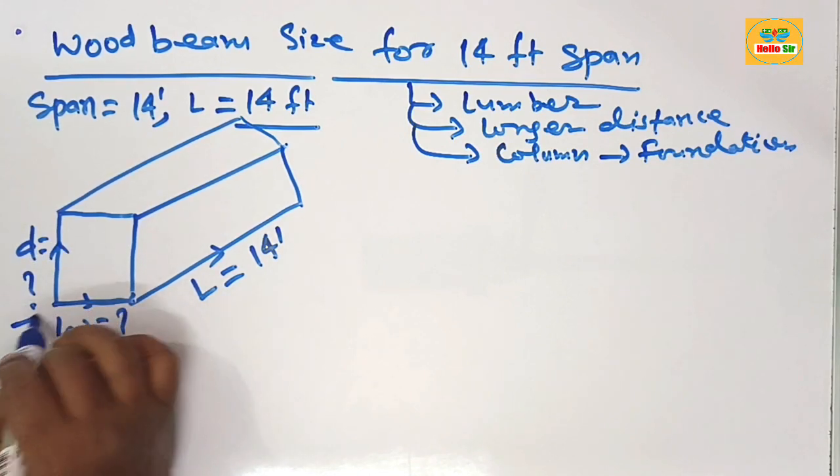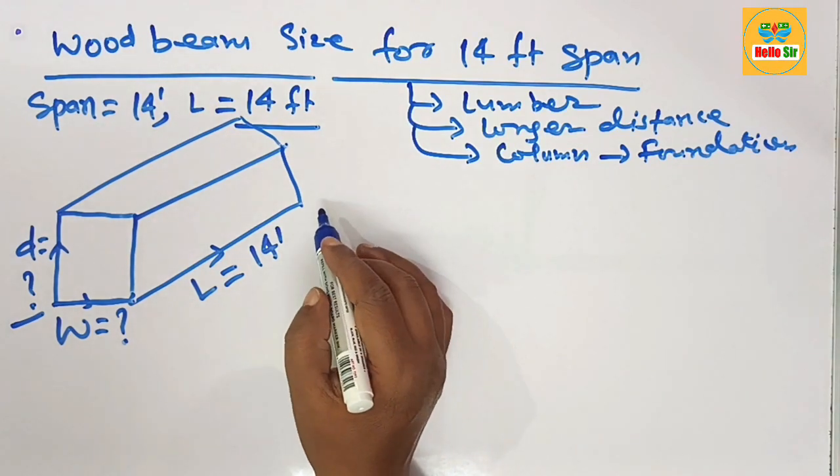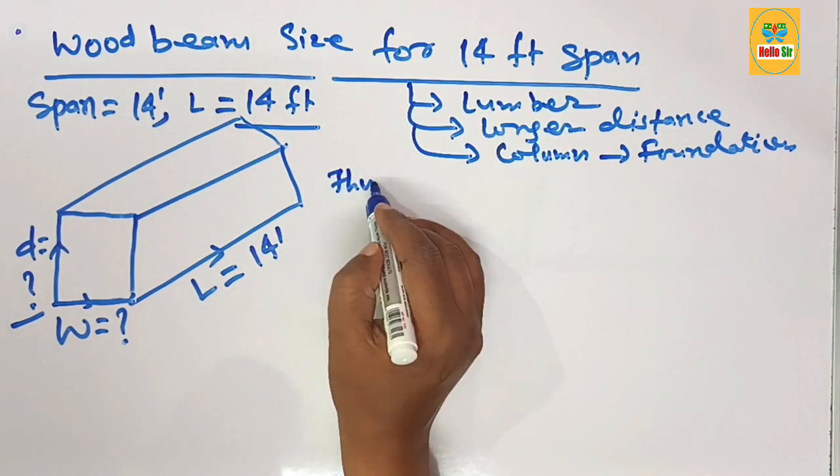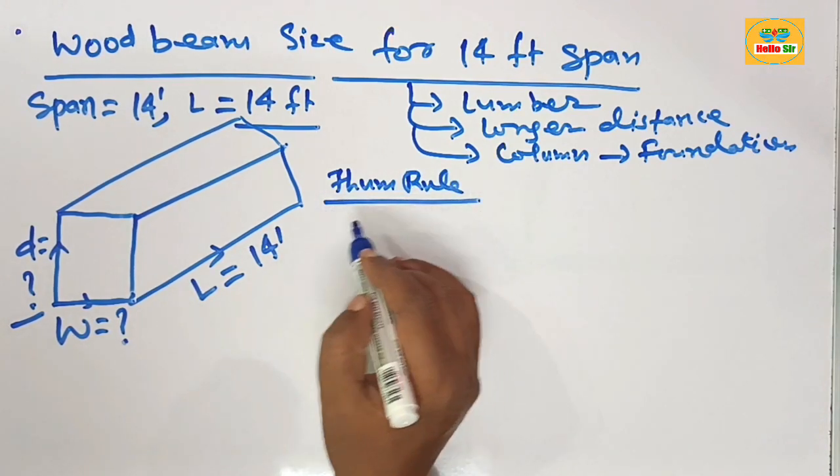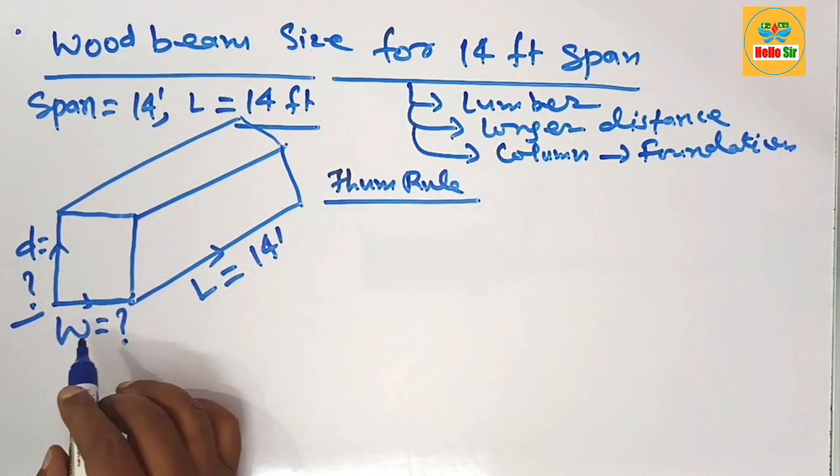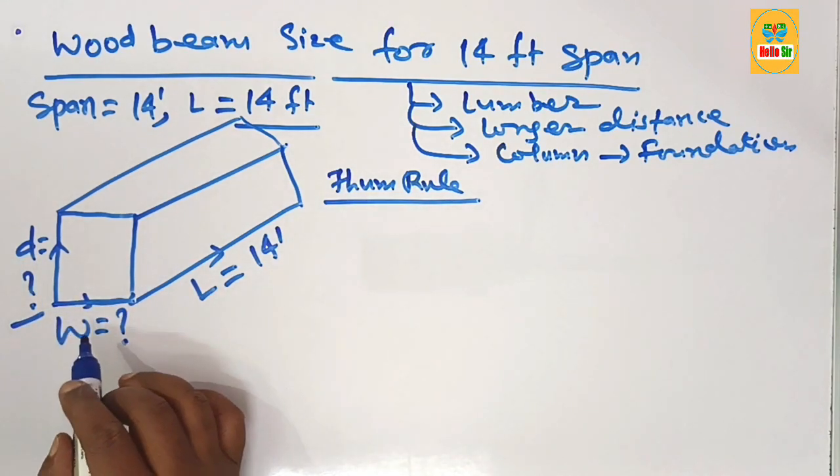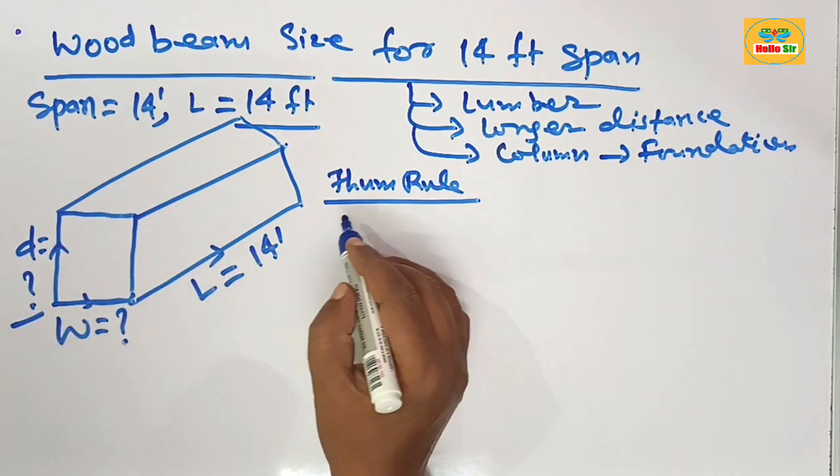Here we calculate wood beam size according to thumb rule. The thumb rule is used for sizing the wood beam. It means you have to find out the depth section of the beam and width section of the beam. Size of wood beam means depth and width of the beam.